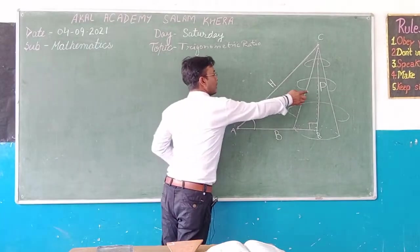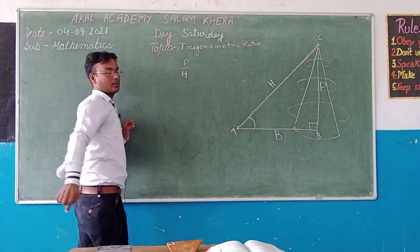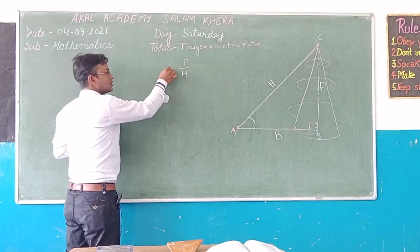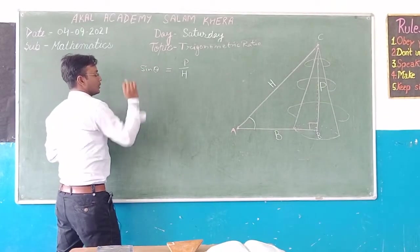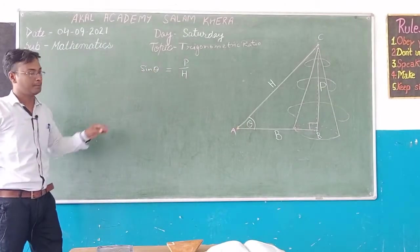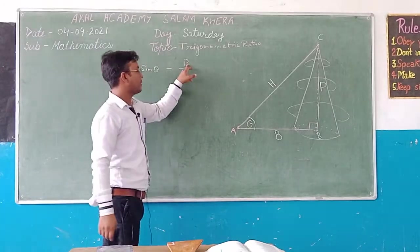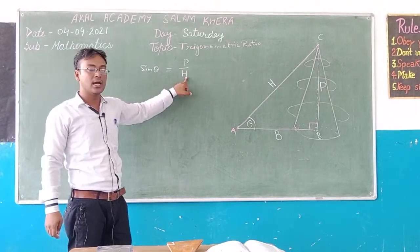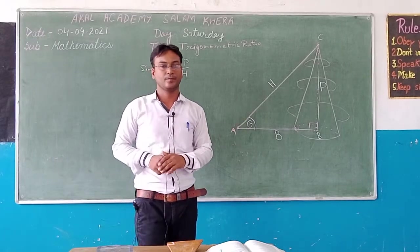First, I am taking the ratio of perpendicular to hypotenuse. In trigonometry this ratio is known as sin theta, where theta is the angle representing angle A. So sin theta is equal to P by H — P meaning perpendicular, the side opposite to the given acute angle, and H meaning hypotenuse, the side opposite to the right angle.